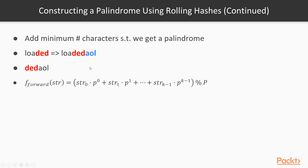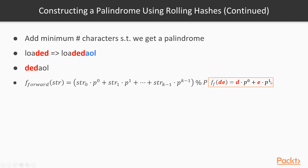We will define the following rolling hash function. f_forward of a string will simply be the indexes of the characters in the English alphabet, multiplied by a small prime number p, raised to increasingly higher powers. k here is the length of the string, and we will simply sum all of these up and take the result modulo capital P, which is a larger prime number usually in the hundreds of thousands. So f_forward of 'de', for example, will be d times p to the power of 0 plus e times p to the power of 1, where d and e refer to their zero-based indexes in the English alphabet.